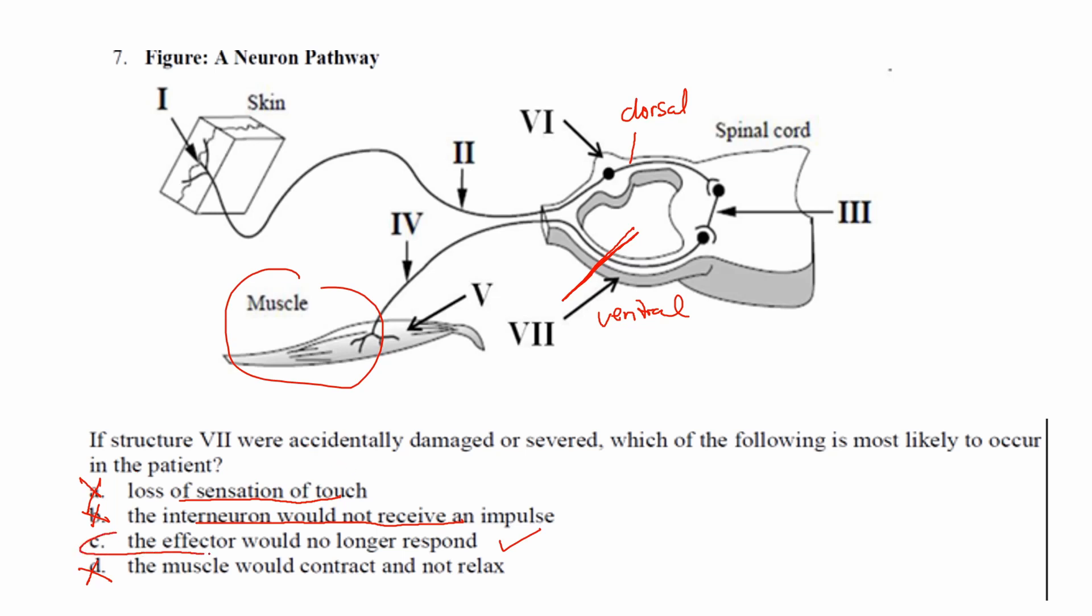And that would leave us to C, the effector would no longer respond. So if that ventral nerve tract is severed, it's almost the same thing as if the motor neuron was severed. It's just not going to be able to send the message to the effector, in this case the muscle, and the muscle would not be able to respond.